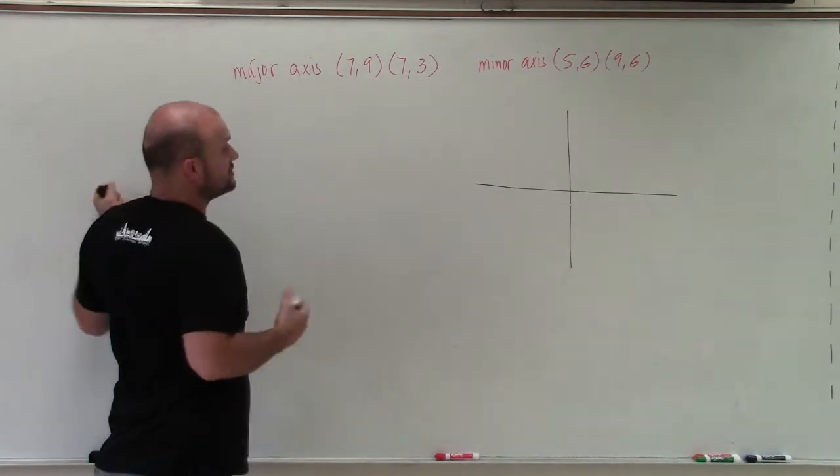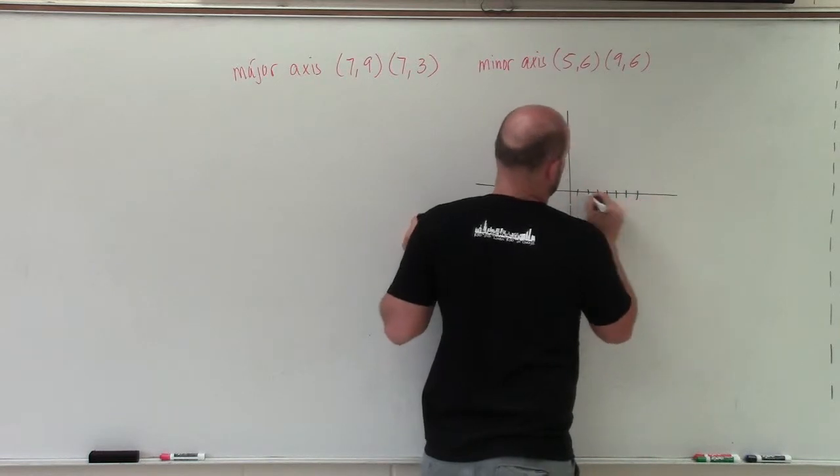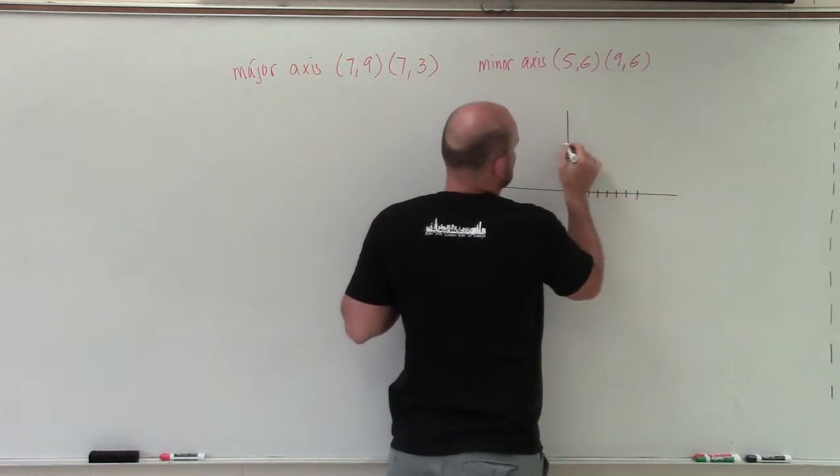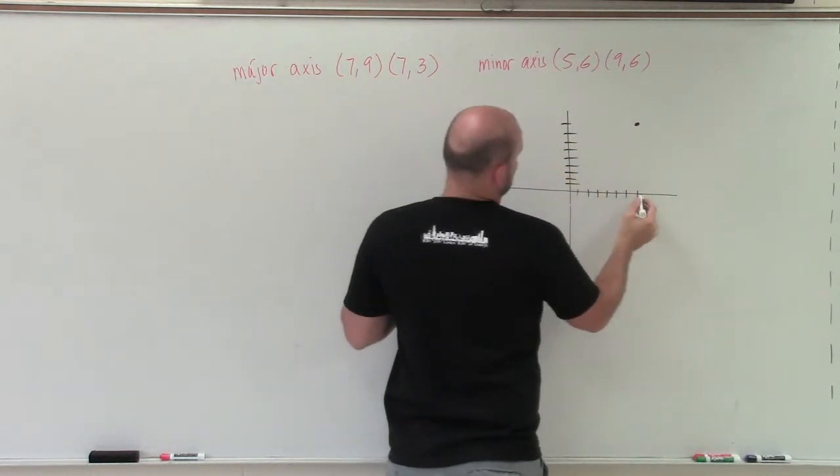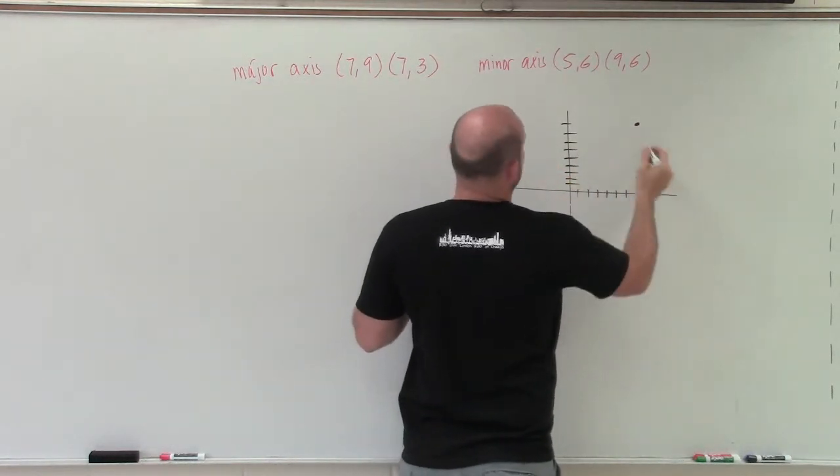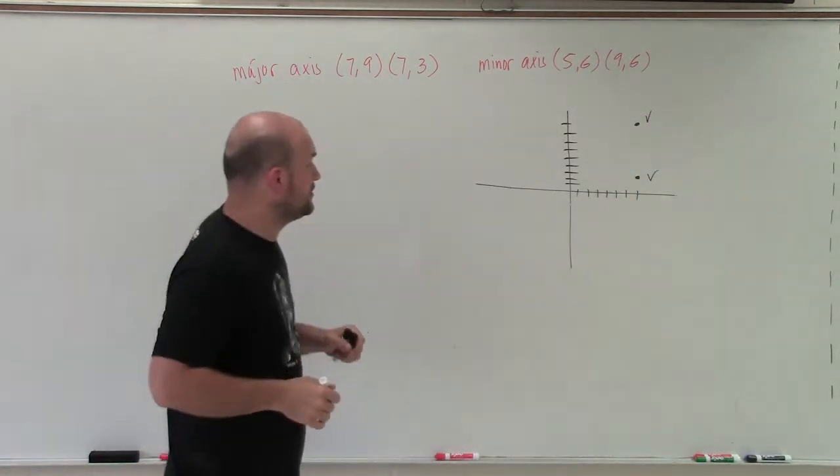So my major axis is at two coordinate points, (7,9) and (7,3). [Plotting the points on the graph] Now remember, these are on my major axis. So those are going to be my two vertices.